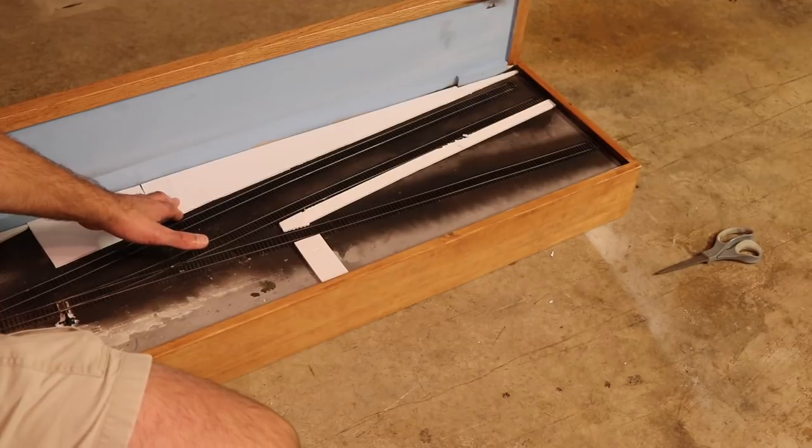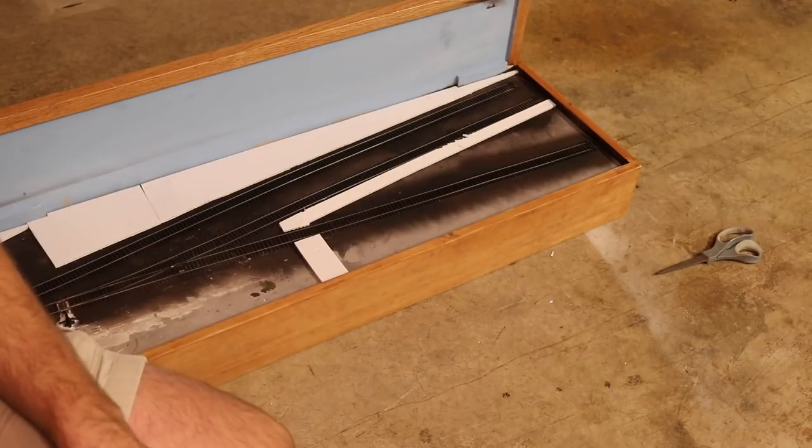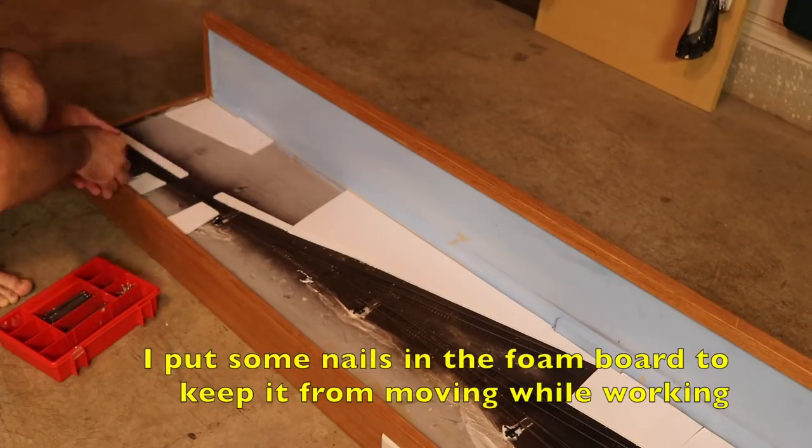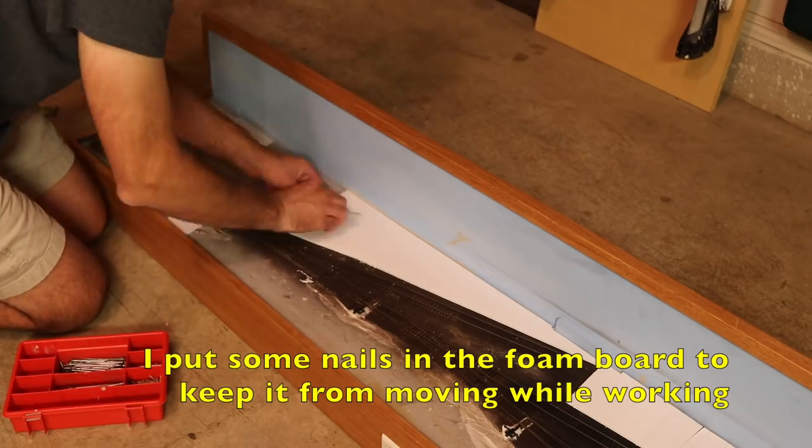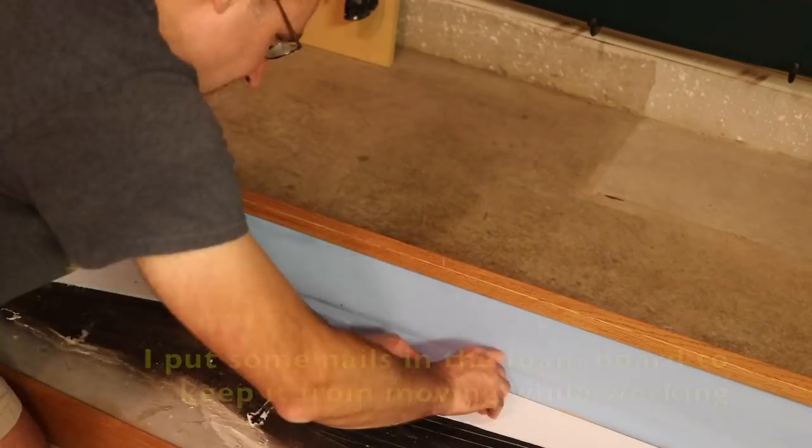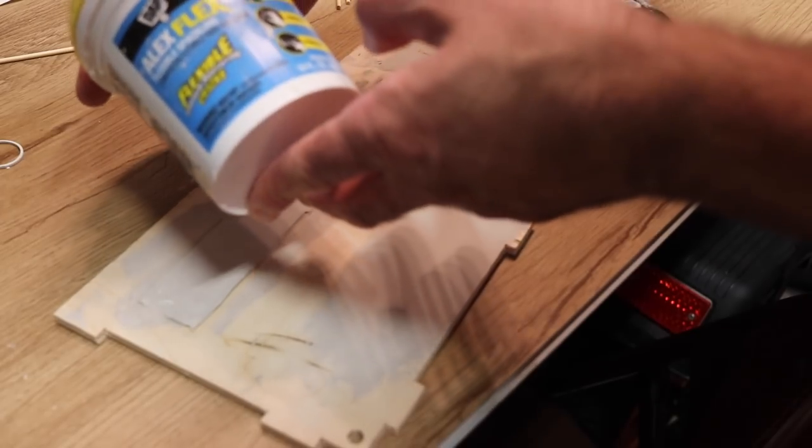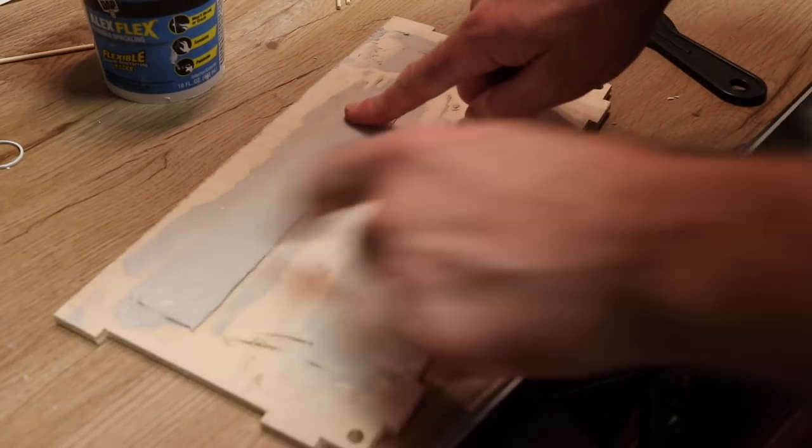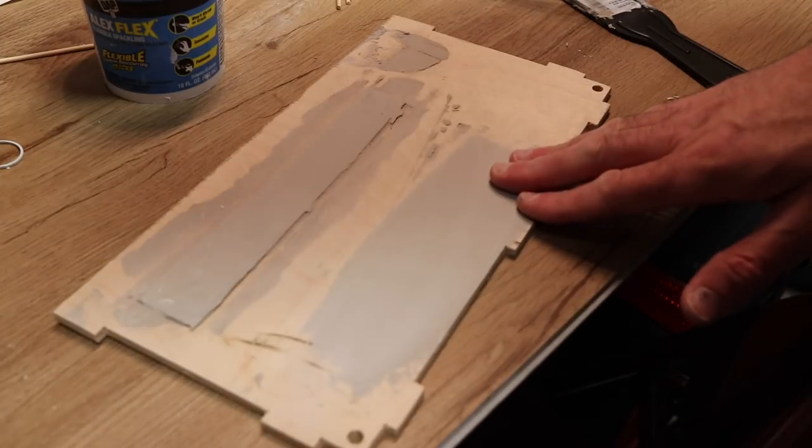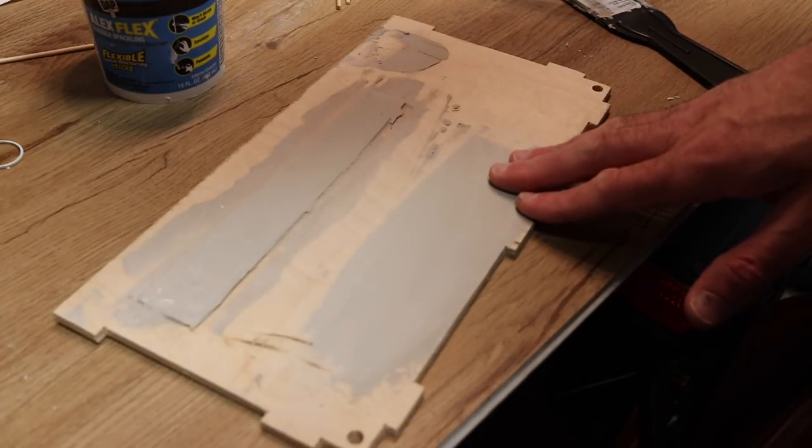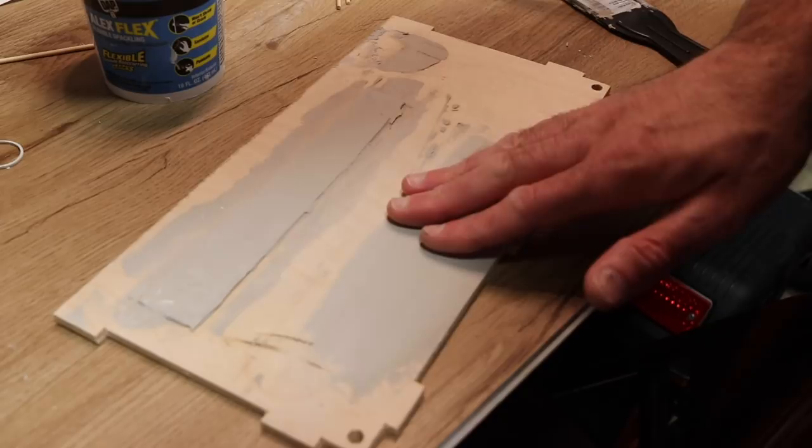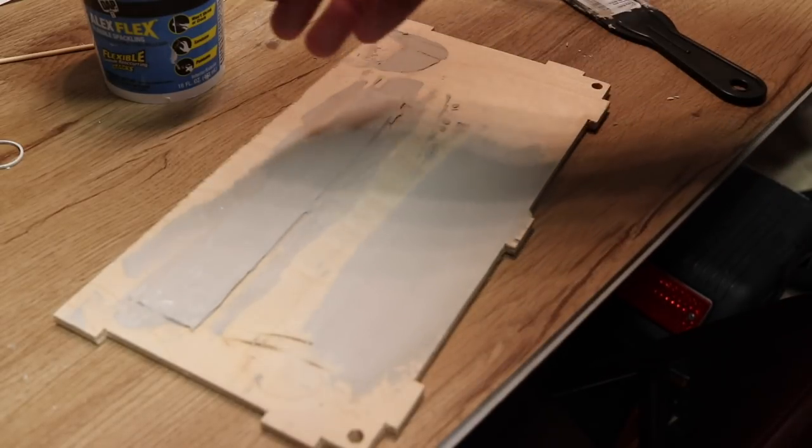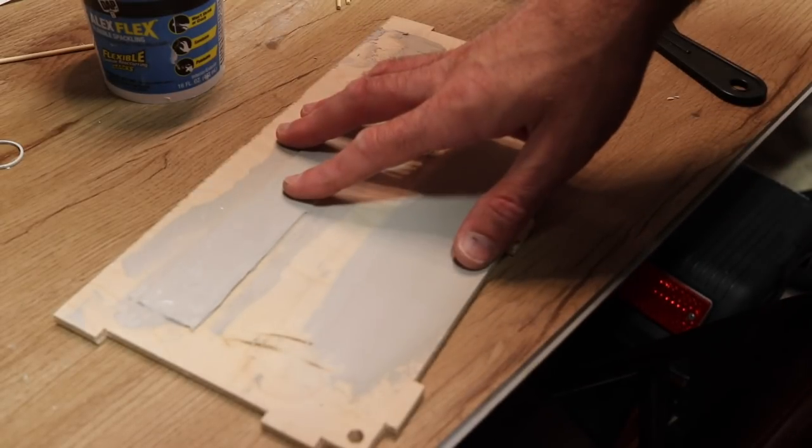I made a sample here using this spackling compound, mixing some paint with it, and did a thin layer here and a thicker layer here, just trying to see how that would work out for doing the actual paving areas. Overall it worked out pretty well in terms of the coloring. I'll mix up something similar to this for the actual layout itself.